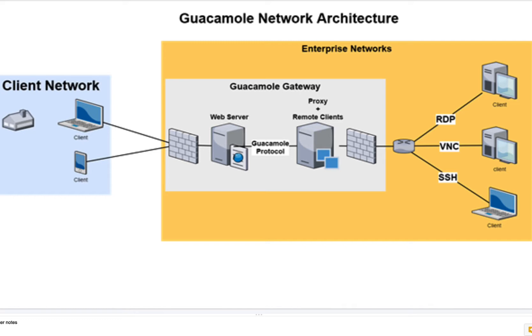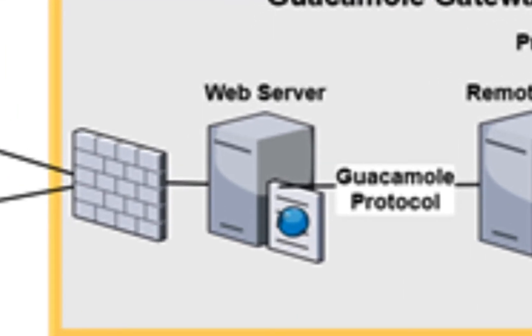Today we're going to be talking RDP, not VNC or SSH — we'll save that for another time. As you look at this diagram, this area here represents a firewall. You must, if you're going to do this, open up ports in your firewall to allow remote clients to come in.